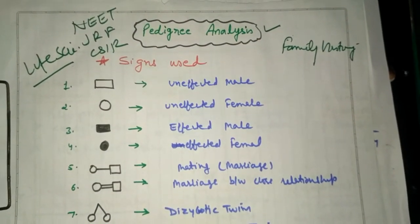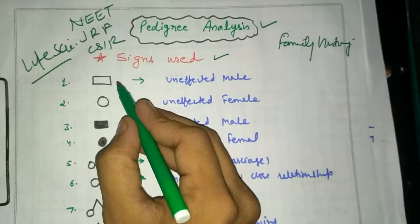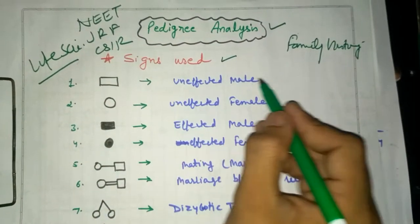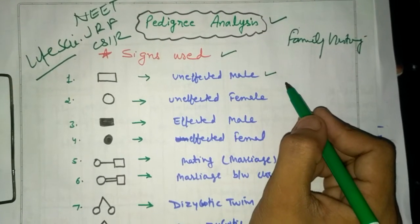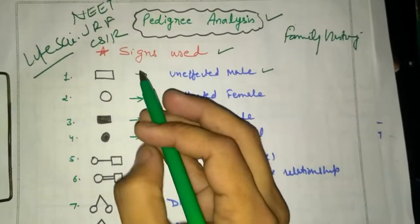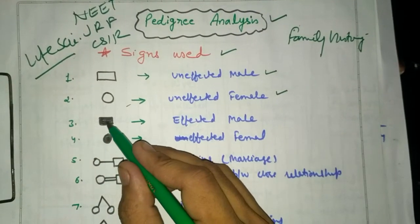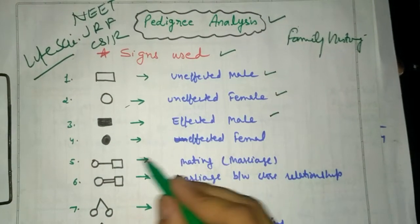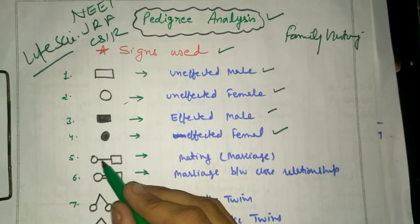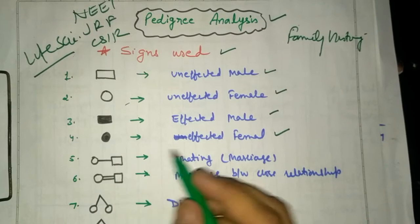First, I will discuss the signs used in pedigree analysis. If the box is clear, it shows an unaffected male, that is the father with no genetic disorder. If it is circular, it is an unaffected female. If the box is shaded, it is an affected male. If the circle is shaded, it is an affected female.